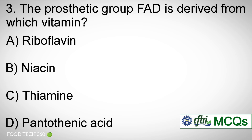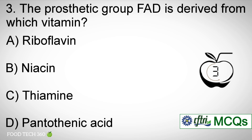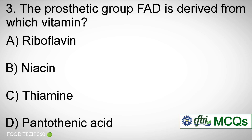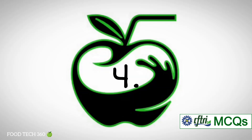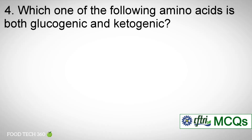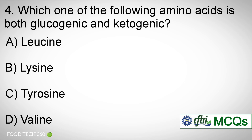Question number three: the prosthetic group FAD is derived from which vitamin? Options: a) Riboflavin, b) Niacin, c) Thiamin, d) Pantothenic acid. Correct answer: a) Riboflavin.